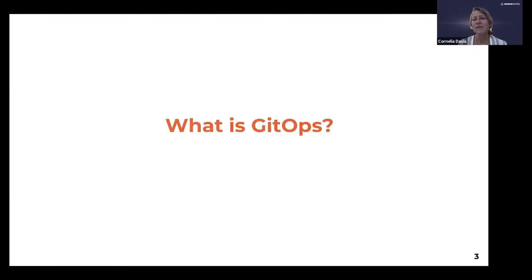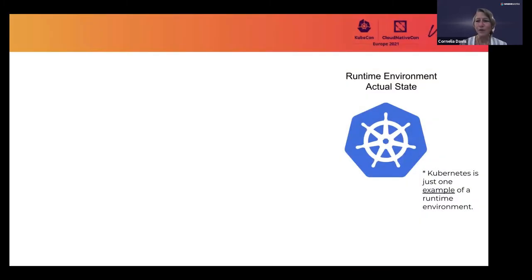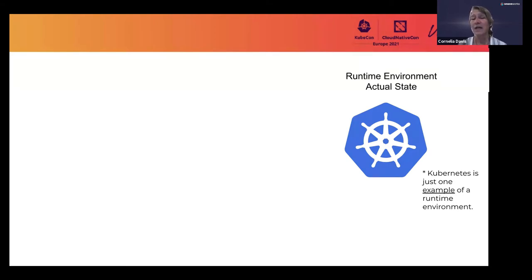Before we jump into the details of the GitOps Working Group, I thought it would be a good idea to talk about what GitOps is. With a word like GitOps, there's an operational element — we're talking about operating something in a runtime environment, depicted here on the slide as Kubernetes. Kubernetes is just one example; GitOps is not restricted to only Kubernetes. You can GitOps infrastructure on Azure, an LDAP system, or any number of different runtime environments.